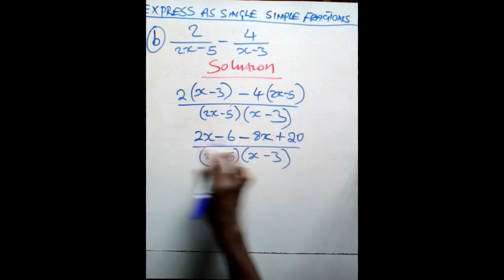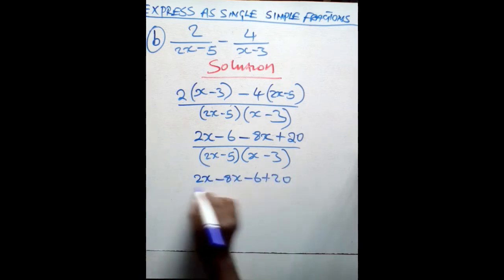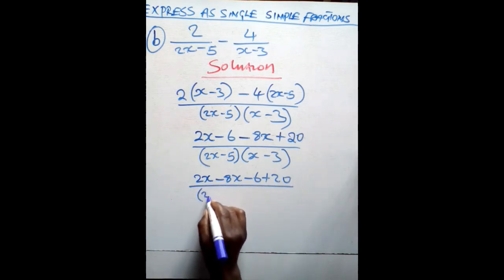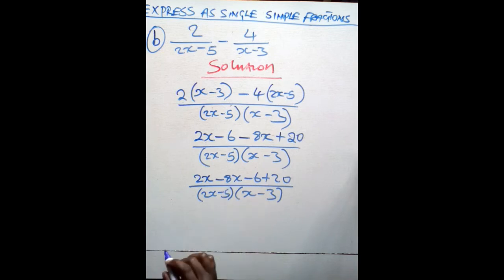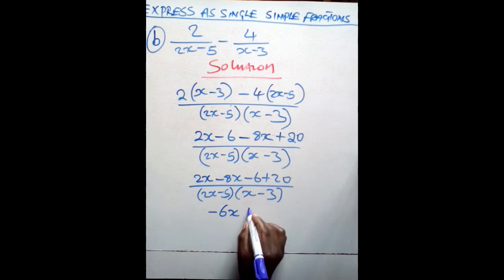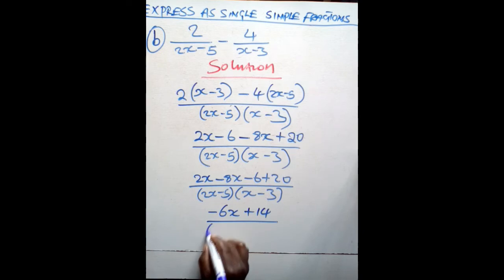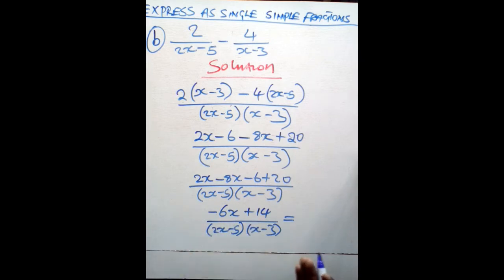From there, collect the like terms in the numerator. You have 2x minus 8x, then minus 6 plus 20, over the same denominator (2x minus 5)(x minus 3). 2x minus 8x — you are subtracting a big number from a small number — so the answer will be negative 6x. Negative 6 plus positive 20 will give you positive 14. Then you have (2x minus 5)(x minus 3). If we factor out a 2, there will be nothing that is going to be cancelled, so we can just rewrite it.